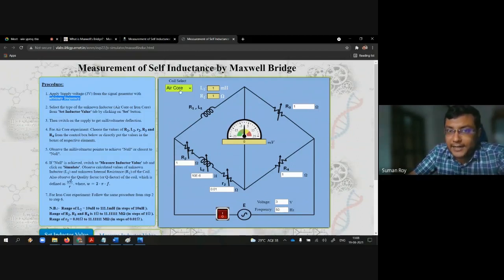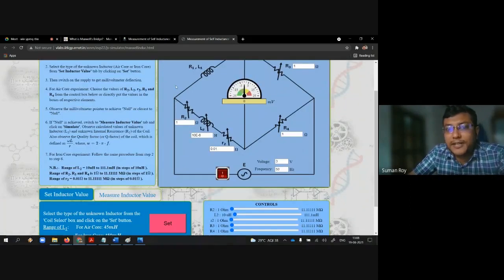Now you have to select the inductor coil. There are two types of coil attached in this experiment: either air core or iron core. You can take any one of them. Let's say, for example, air core.